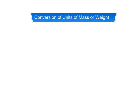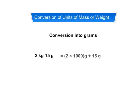For example, if we want to convert 2 kilogram 15 grams into grams, we multiply 2 by 1000 and add the product with 15 grams.